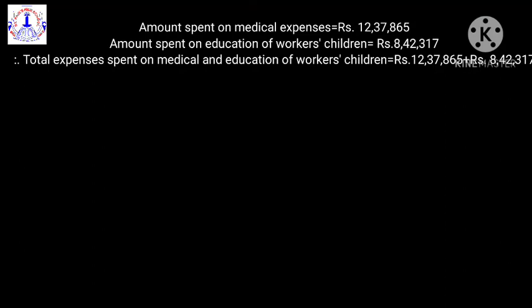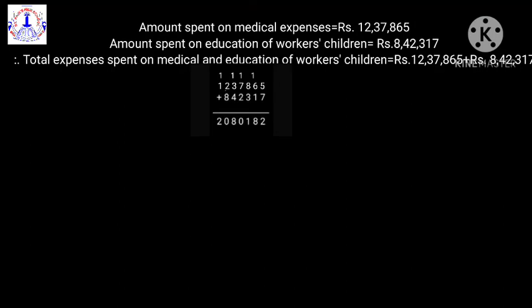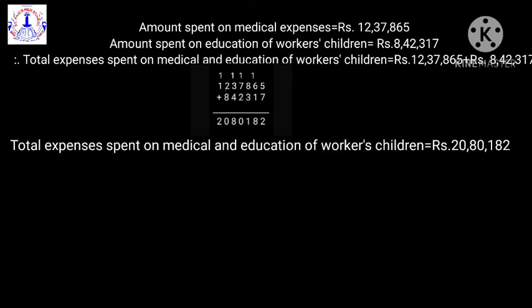To find total expenses, we have to add the amount spent on medical expenses and the amount spent on education of the workers' children. Let's do the addition of 12,37,865 and 8,42,317. We get the answer 20,80,182. Total expenses spent on medical and education of workers' children is rupees 20,80,182.